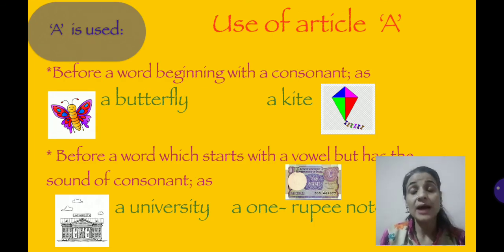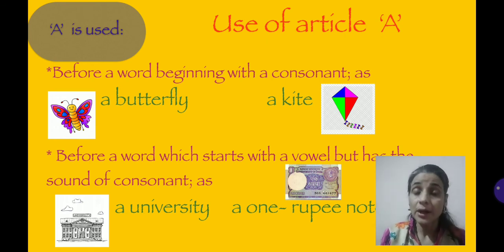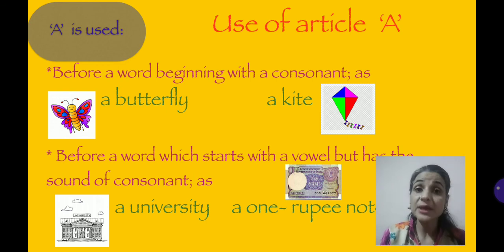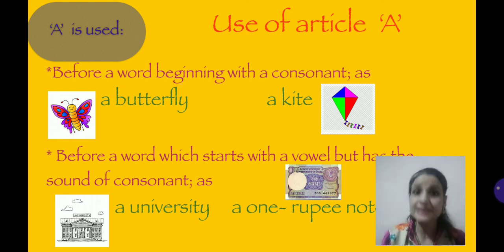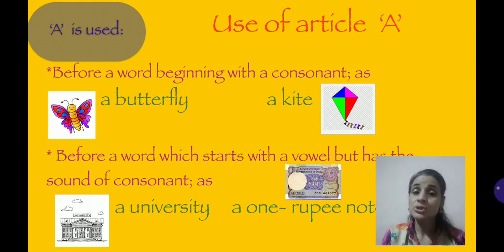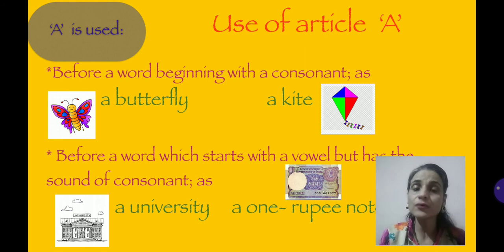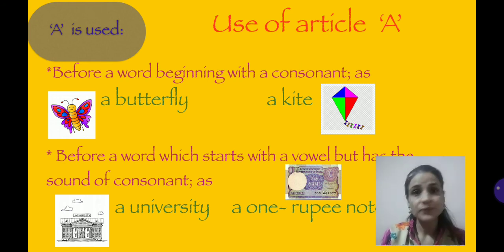Now we will learn one by one all the articles. First, where article 'a' is used. Article 'a' is used before a word which begins with a consonant. There are 21 consonants in our alphabet, like b, c, d, f, g, h and many more. So before a word which begins with a consonant, we use article 'a'. For example, a butterfly, a kite.